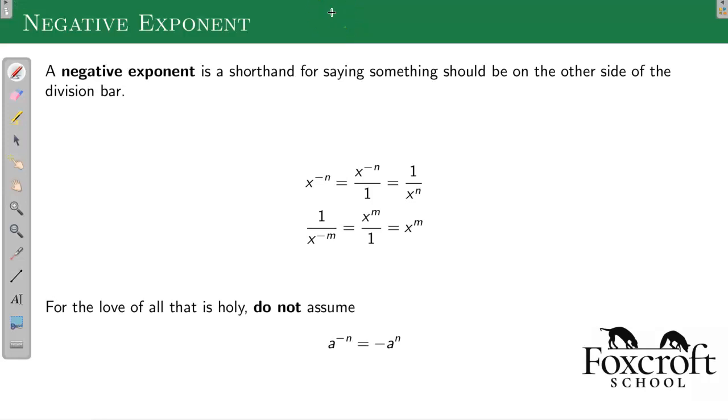Here's the definition of what a negative exponent is. There's reasons for why it's defined this way, but for right now, just know that I'm telling you this is the definition. So if I have a negative exponent, basically to me that just is a shorthand for saying this thing wants to be on the other side of the division bar. So whenever I cross something across the division bar, then it becomes a positive exponent.